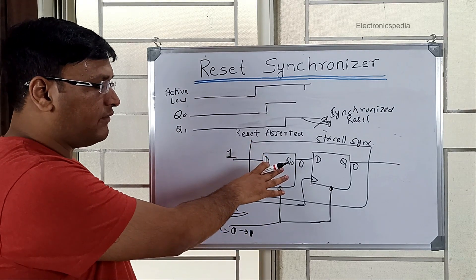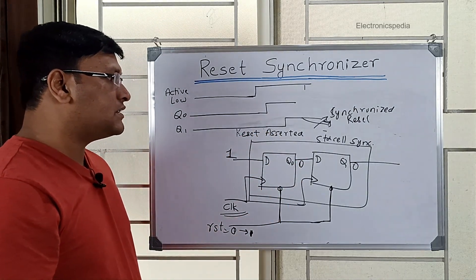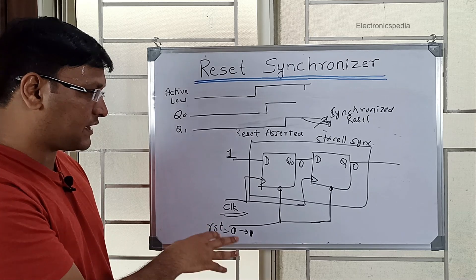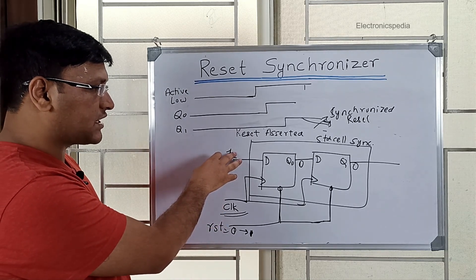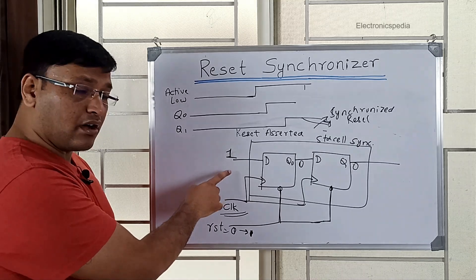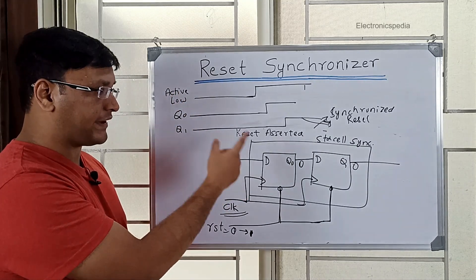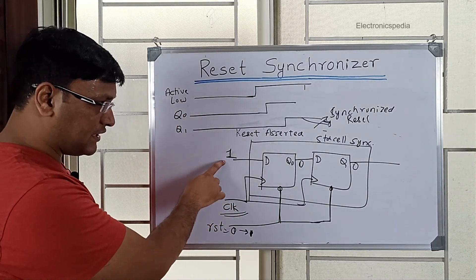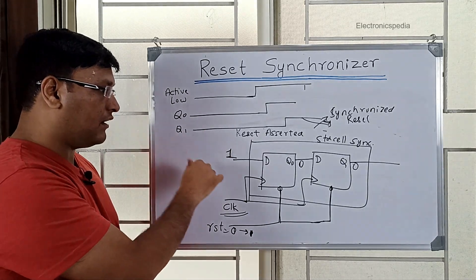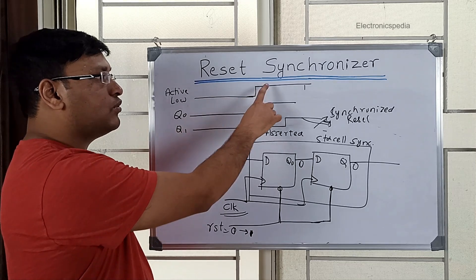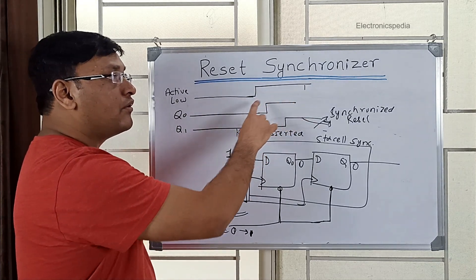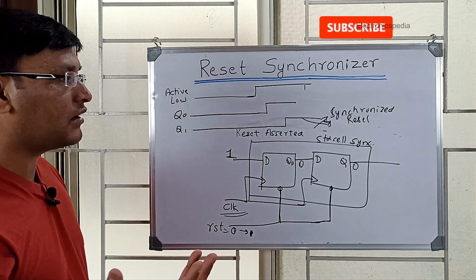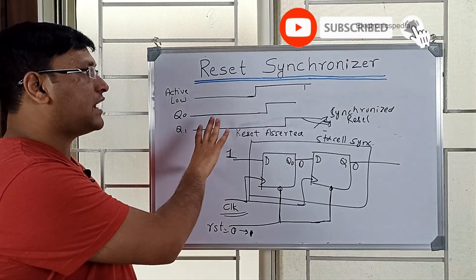This is the idea of how to implement a reset synchronizer. Instead of connecting the D input to any other signal, we connect it to a constant one or zero depending on whether it is active high or active low reset. For active high, we connect zero; for active low, we connect one — the stable value representing out-of-reset state.